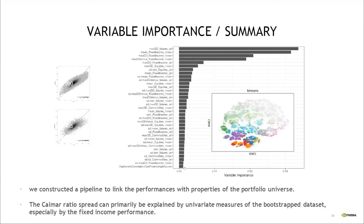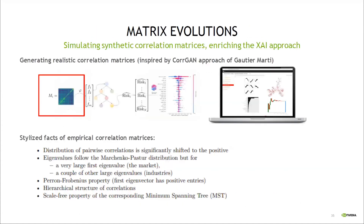The one thing we were not fully satisfied with was the use of bootstrap series — we wanted more exotic scenarios. That's where Gautier's corGAN approach came in: a generative adversarial network approach to produce correlation matrices that have the same properties and stylized facts as true empirical ones, which is really useful.